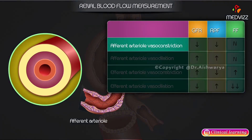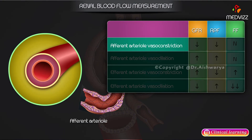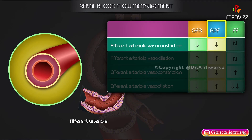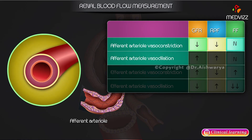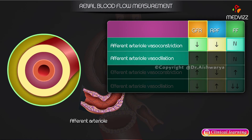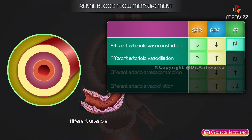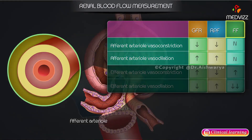Efferent arteriole vasoconstriction: the GFR decreases, renal plasma flow decreases, and the filtration fraction is neutral. Efferent arteriole vasodilation: GFR increases, renal plasma flow increases, and the filtration fraction is neutral.